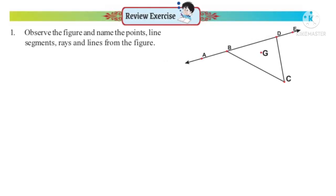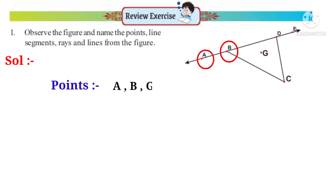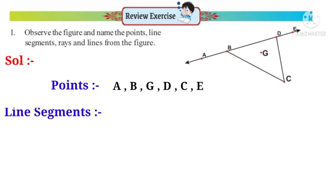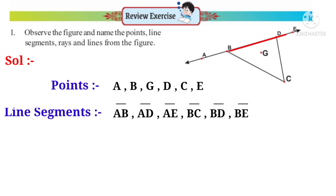Now let us do the review exercise. First problem: observe the figure and name the points, line segments, rays and lines from the figure. Solution. Points: A, B, G, C, D and E are the points. Line segments: AB, AD, AE, BC, BD, BE, CD and DE.